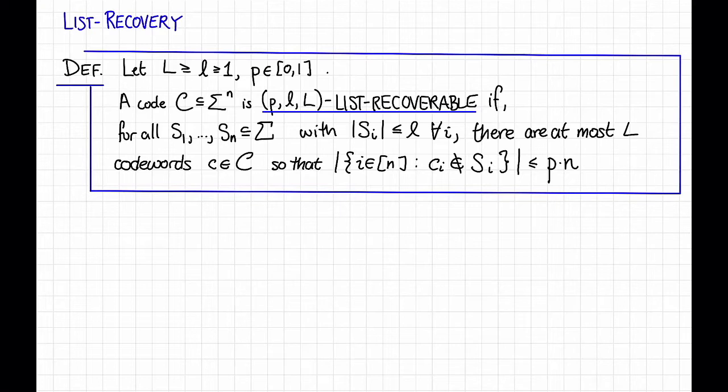So here's the definition of list recovery. Let's choose parameters capital L and little l, so that capital L is larger than little l and both are integers greater than or equal to 1. And let's choose a parameter p between 0 and 1. We say that a code C over an alphabet sigma of length n is p,